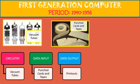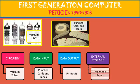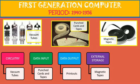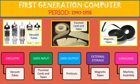Data output was given as printouts. External storage was magnetic tapes. Whatever data was stored, it was stored in magnetic tapes — you can see the picture of magnetic tapes here. The language used in the first generation was machine language and assembly language. Machine language is the language of zeros and ones which the computer understands.